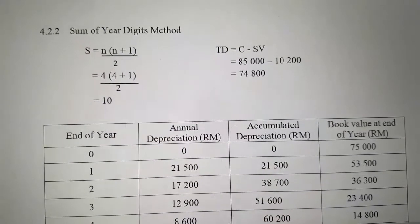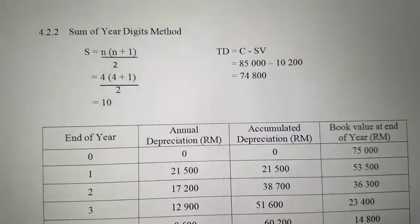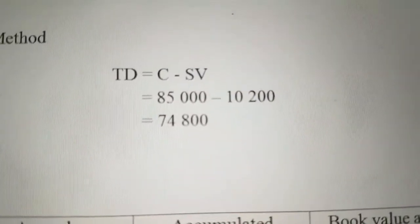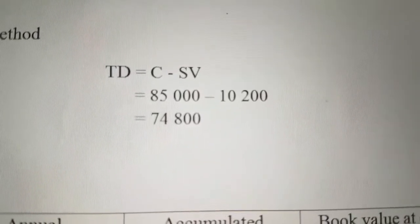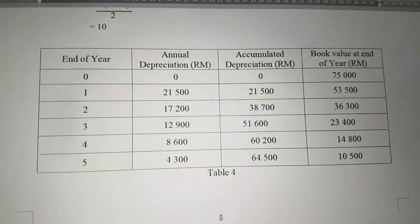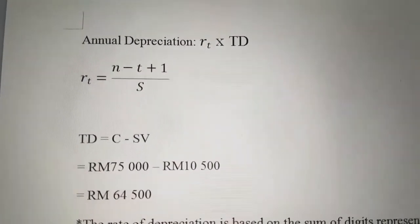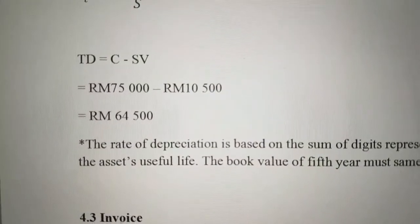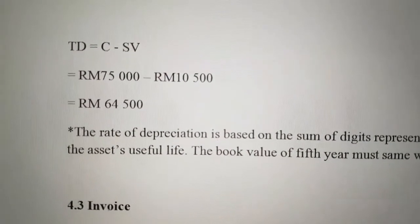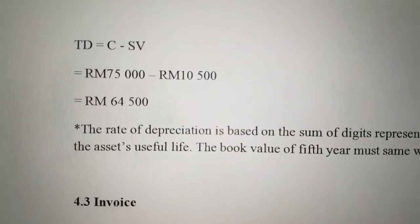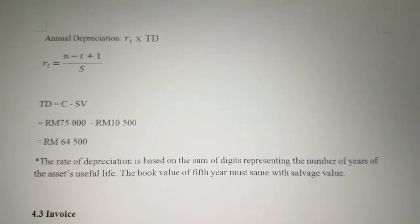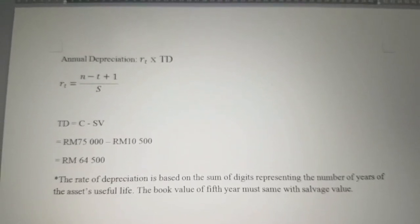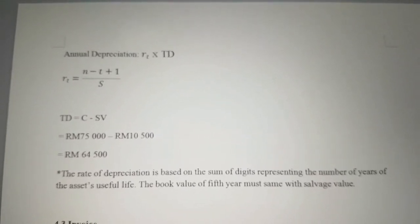For the Sum of Years Digit method, the formula is S equals N times (N plus 1) divided by 2. Substituting the data, we get S equals 10. The total depreciation is cost minus salvage value, which is 75,000 minus 10,500, equalling 64,500. The annual depreciation rate formula is RT times TD, where RT equals (N minus T plus 1) divided by S. The rate of depreciation is based on the sum of digits representing the years of the asset's useful life, and the book value in year 5 must equal the salvage value.